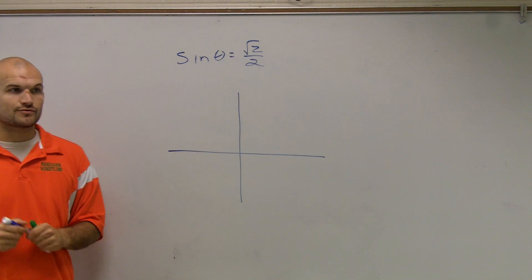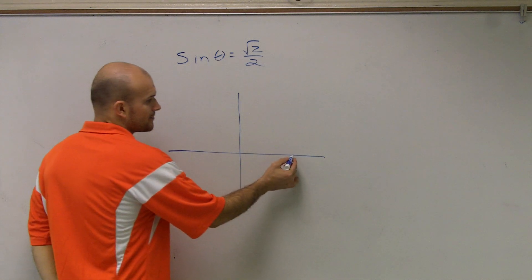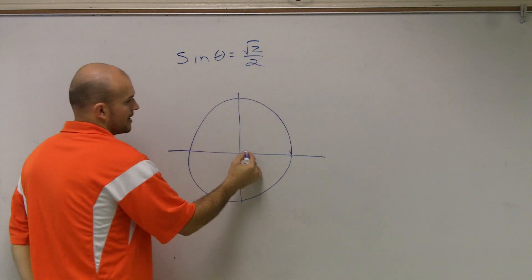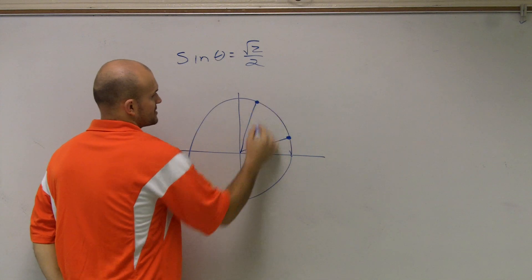So there's a couple ways you can do this. You can rewrite the unit circle by memory or take a look at the one that you have. Well, I have by memory our three most important points.